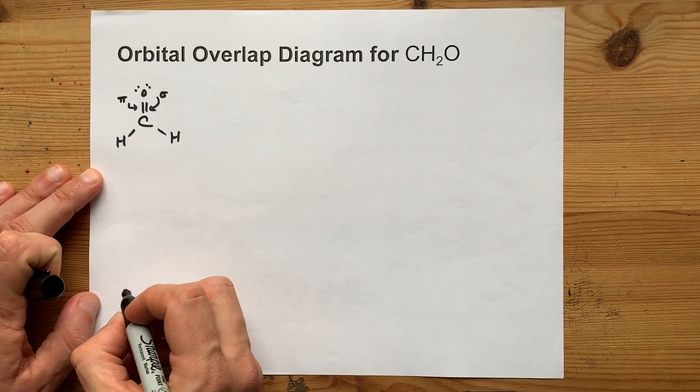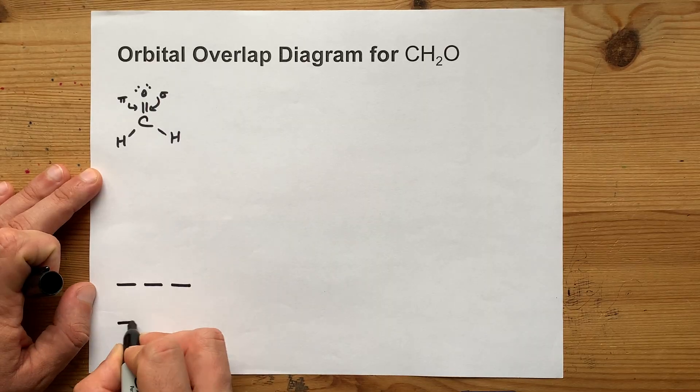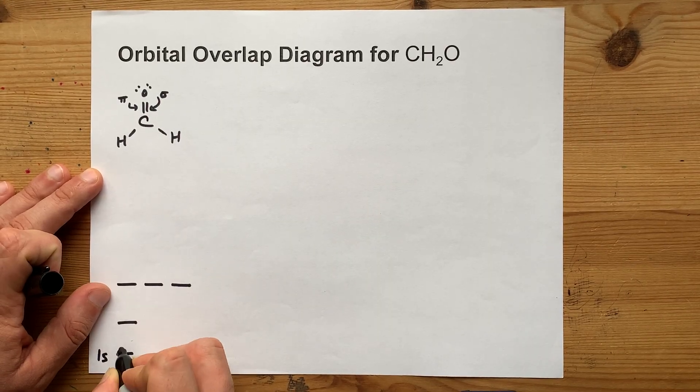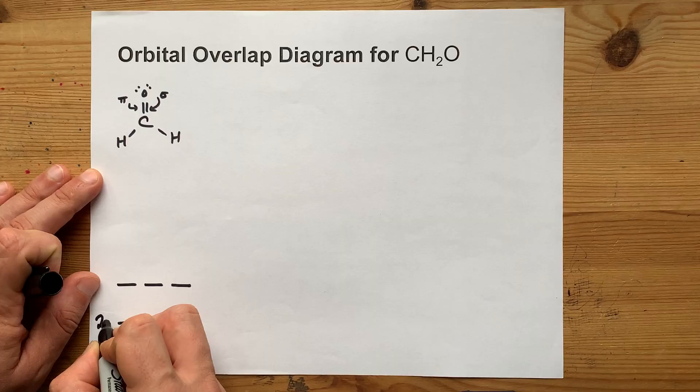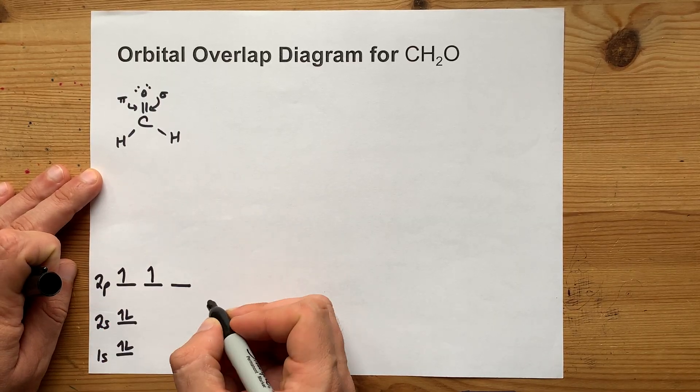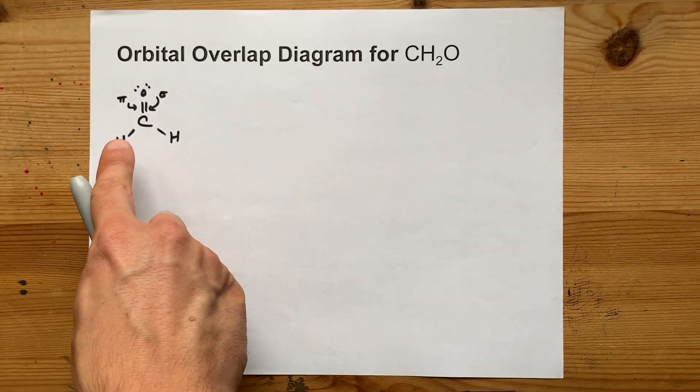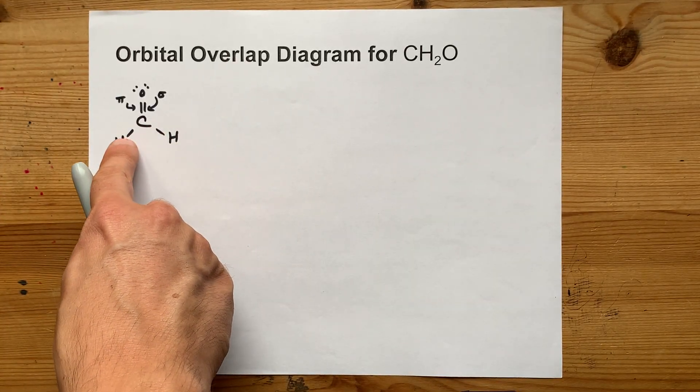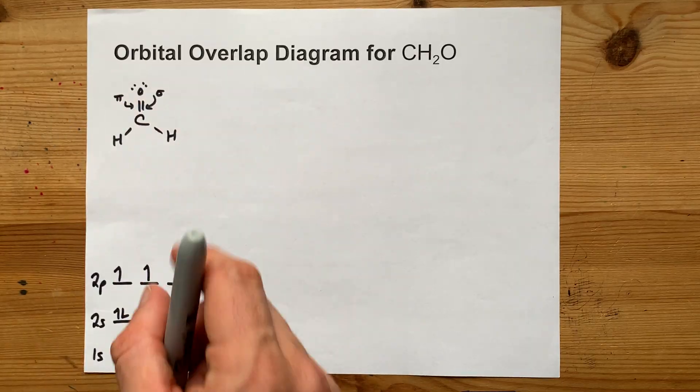Now what that means is that carbon, which normally has an electron configuration of 1s², 2s², 2p², needs to hybridize to accommodate three sigma bonds, 1, 2, 3, and a pi bond.